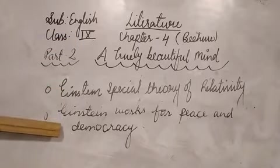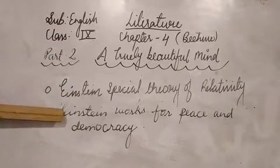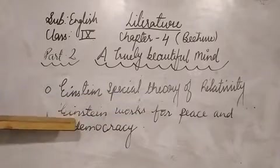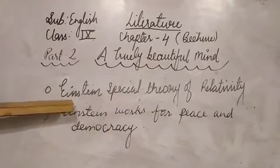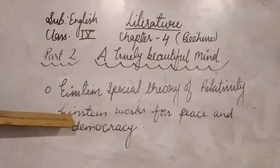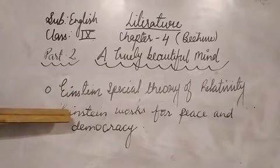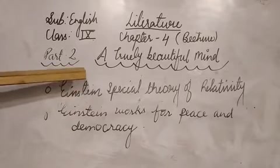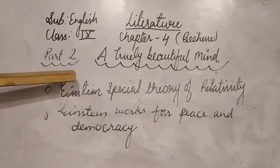The another plot of the story, which is the last plot, Einstein works for peace and democracy. When the Nazis came to power in Germany, Einstein immigrated to the USA when the world's scientists came to know that Germany had developed nuclear fission. They became afraid.